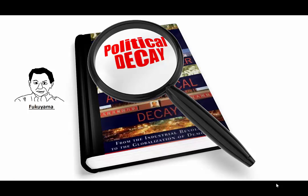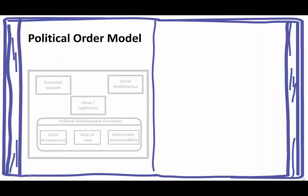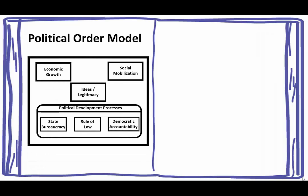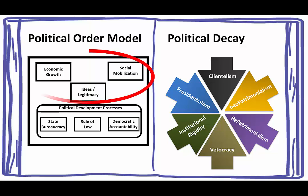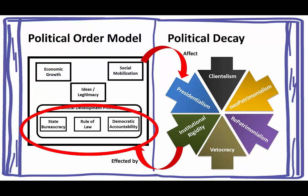This is our fourth and last video. It's about political decay. We have Fukuyama's model for political order, and now we're going to look at what he defines as political decay. He has six types of political decay. An important reminder is that the top three dimensions in the political order model affect the political decay, whereas the bottom three are affected by the political decay — those are the process issues.